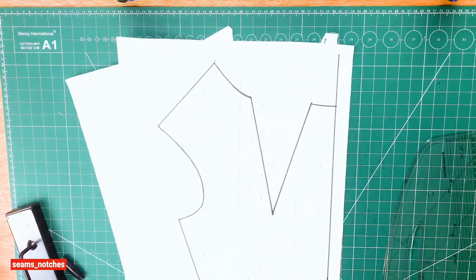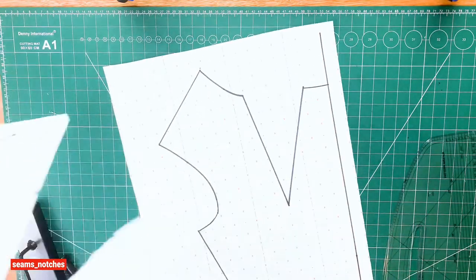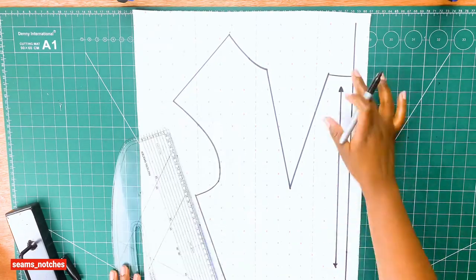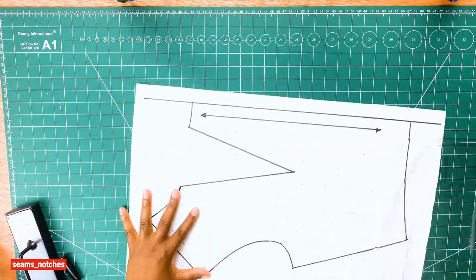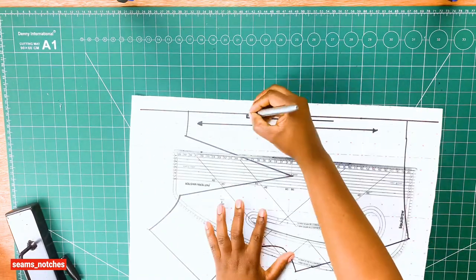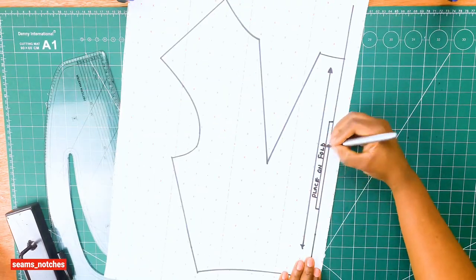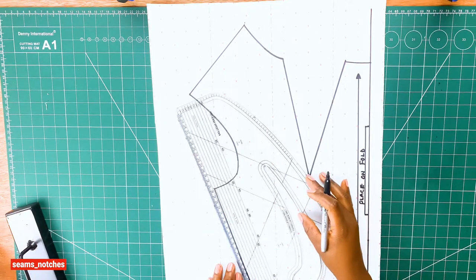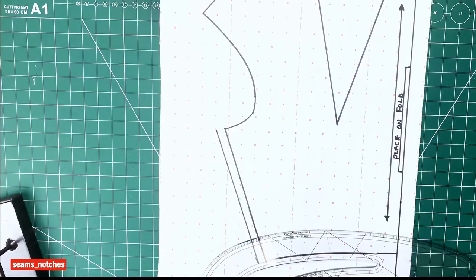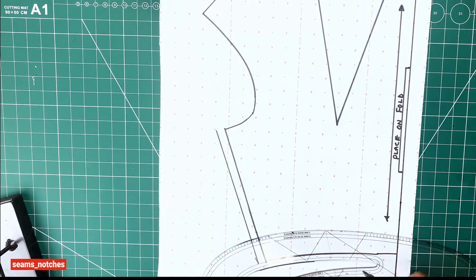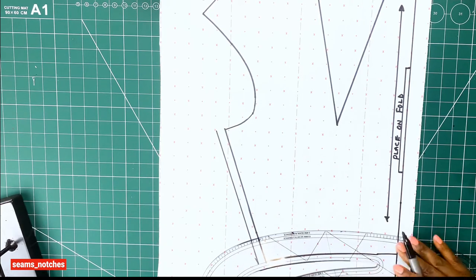Once we are done tracing, we need to add our seam allowance. But before we do that, we need to make sure we label our pattern. Because this is the front bodice, we need to label it as 'place on fold.' Then we will add our seam allowance. I am adding one centimeter as my seam allowance, so you can add whatever measurement you need.